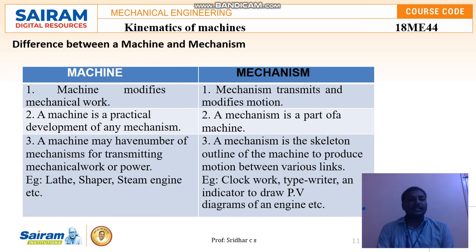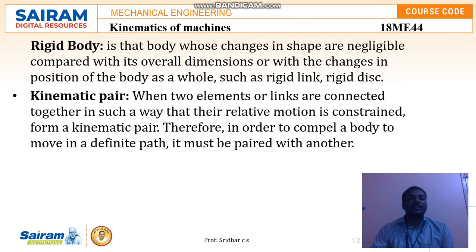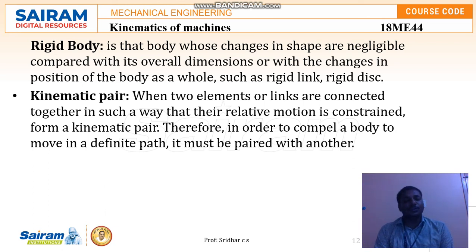A rigid body is a fixed body whose shape does not change; no force or motion can be transmitted through it. A kinematic pair is when two elements or links are connected together to form a relative motion with a constraint — that is what we call a kinematic pair.